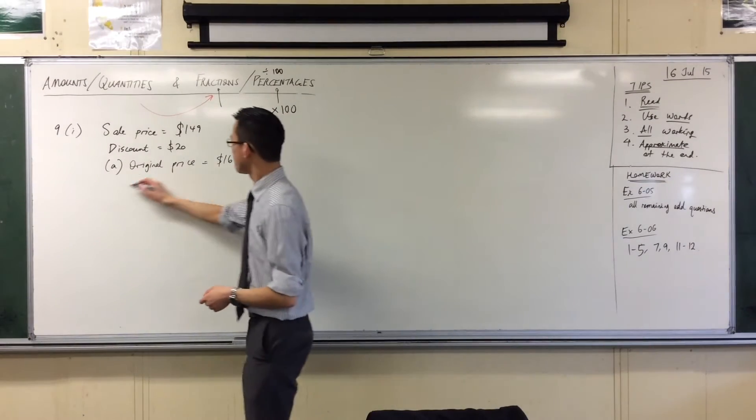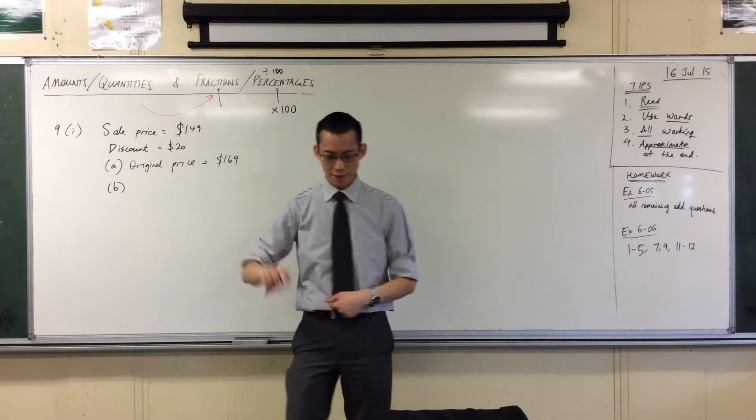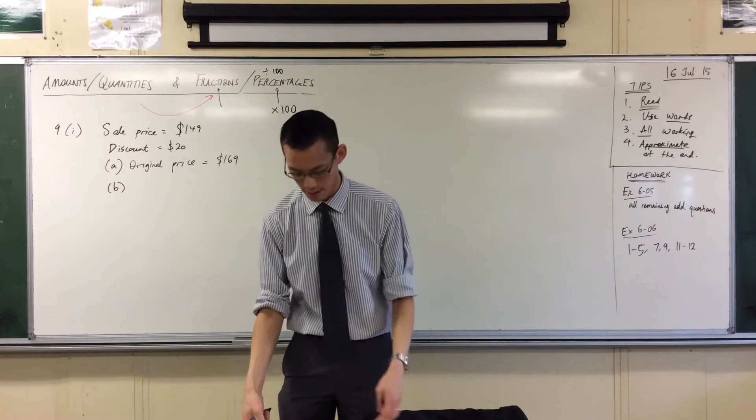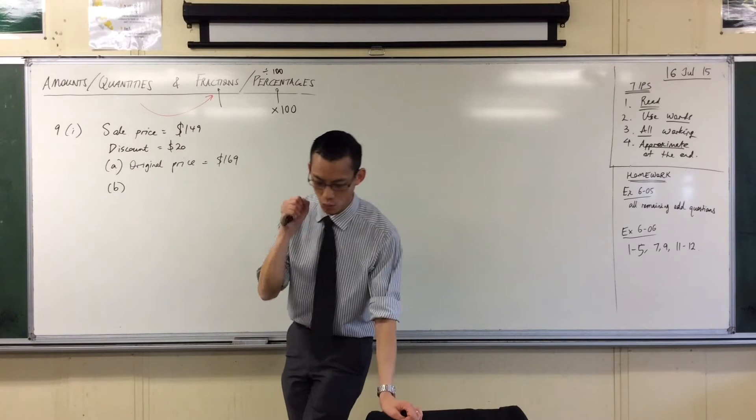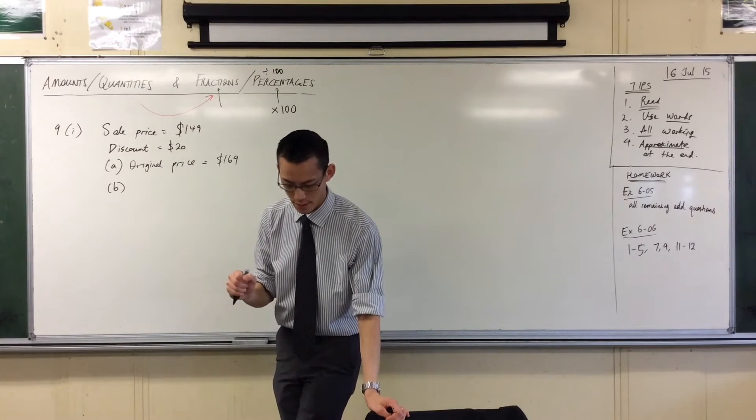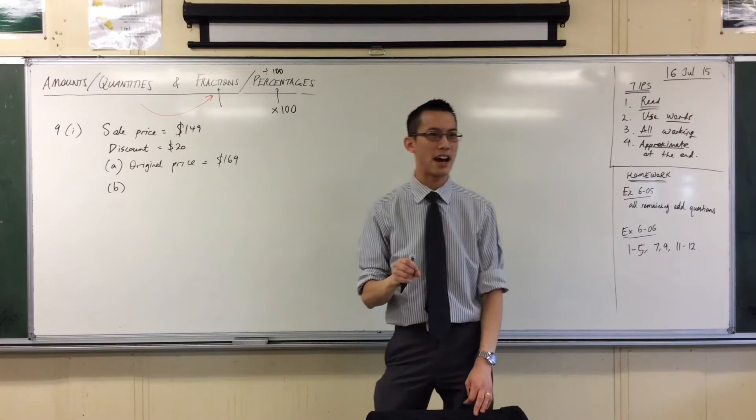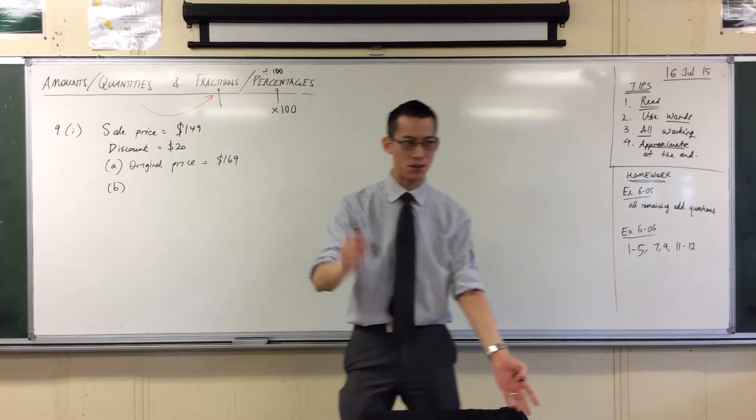Now Part B—read it carefully because there's lots of parts to it that you need to dissect. Calculate to one decimal place the percentage discount. Give me a suggestion, what should I write before I start any numbers?